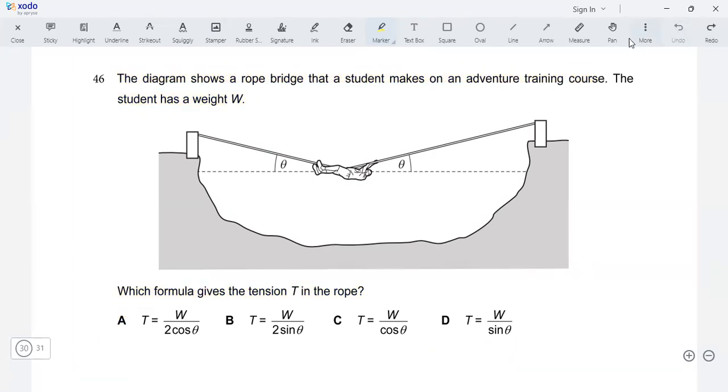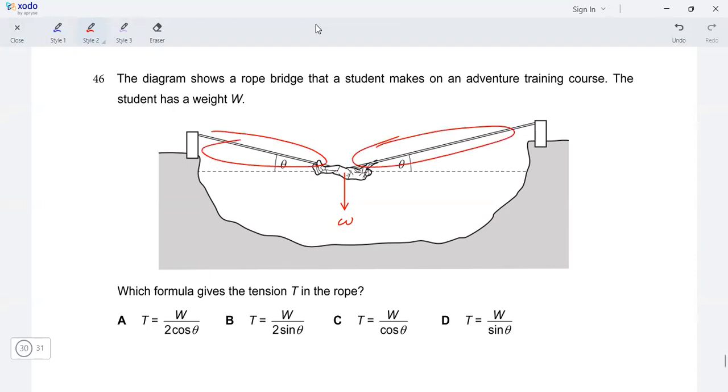So let's first draw all the forces on the diagram, starting with the weight force. So the weight of the student is going to be downwards, straight downwards. Next, the tension forces, the tension along the ropes. The direction of the tension forces are going to be directed away from the student.